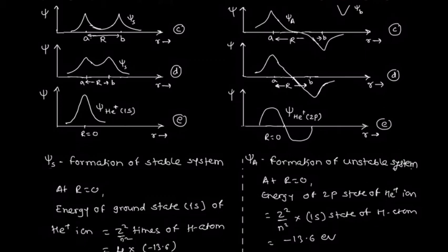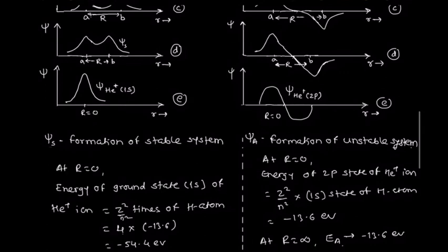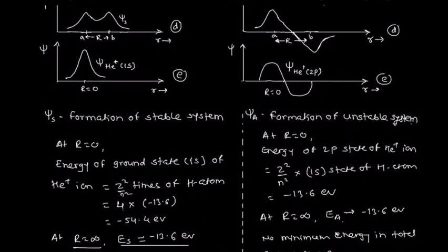For the anti-symmetric function at R equal to zero, the wave function is similar to the helium plus ion in the 2p state. The energy is (Z squared / n squared) times the ground state energy of hydrogen: Z equals 2, n equals 2 for the 2p state, giving (4/4) times minus 13.6, which equals minus 13.6 eV. Similarly at R equal to infinity, the wave function resembles the ground state of the hydrogen atom, so the energy is also minus 13.6 eV.